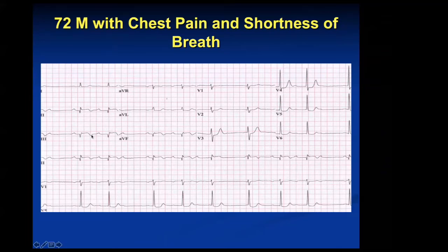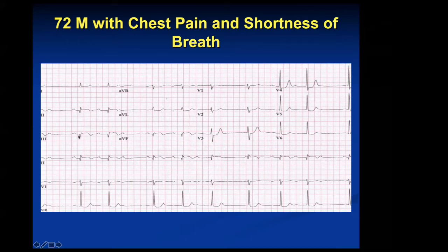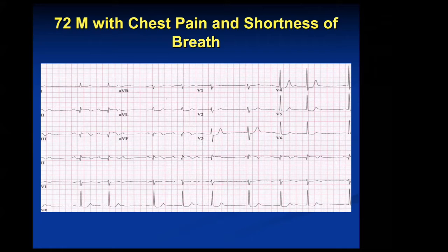That's why it's so important to go from the TP — that's your isoelectric baseline. I'm not using the PR because that can be depressed in things like pericarditis. So you use the TP as your isoelectric baseline, and then you see there's clear elevation. You have Q waves, ST elevations, and T-wave inversions — this is an evolving inferior ST elevation MI, clearly not brand new.